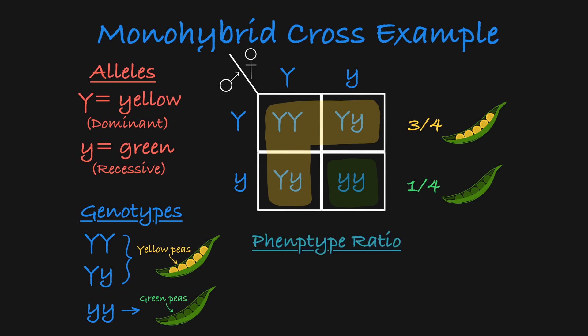This phenotype ratio is three to one, which will also be what you typically expect when you observe a monohybrid cross.